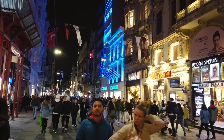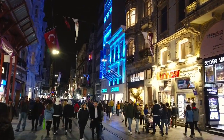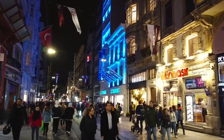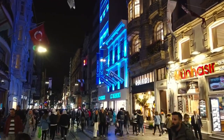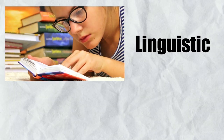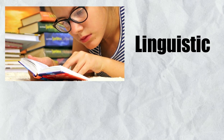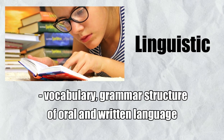Basically, we are surrounded by multimodal text. Often times, we're not curious about it. The first type of multimodal text is what we call linguistic — the vocabulary and grammar structure of oral and written language.